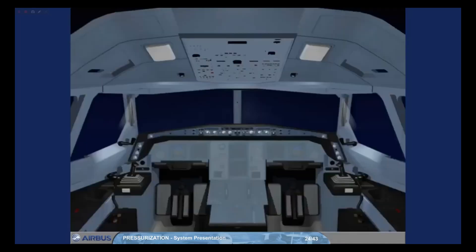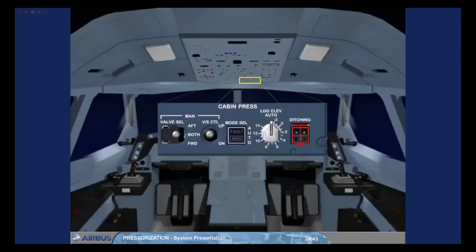On the overhead panel, the cabin pressurization panel contains controls to operate the pressurization system. Under normal conditions, no pilot action is required on this panel during flight.